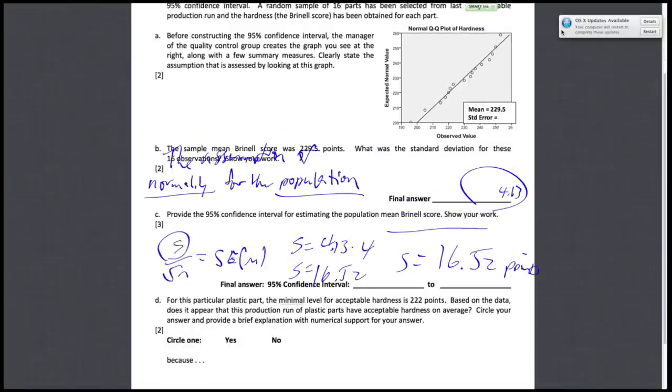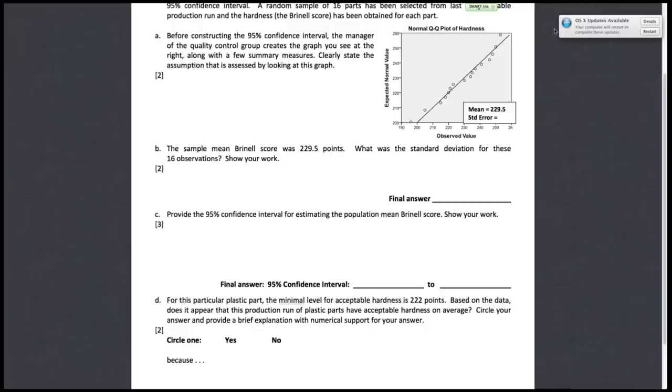So for part C, we want to provide the 95% confidence interval for estimating the population mean Brunel score. Recall that the way you find a confidence interval is with this general formula. So we'll take sample mean, plus or minus.